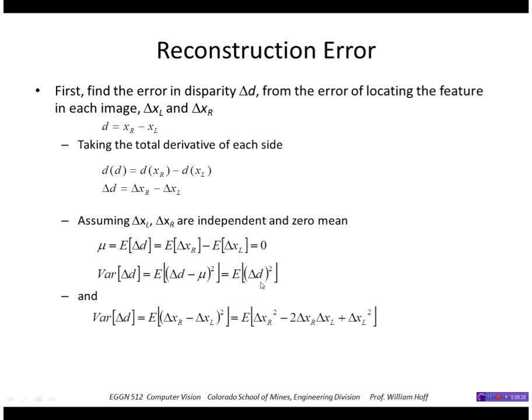Plugging in what delta d squared is, it's (delta xr minus delta xl) squared. Separating or multiplying out that equation, I get this. Taking the expectation of each of the terms, I get this. The middle term here is zero because delta xr and delta xl are independent and zero mean. So I get the variance of the disparity error is the variance of the error in the x position in the right image plus the variance of the x position in the left image. Or more concisely, sigma_d squared is sigma_r squared plus sigma_l squared.